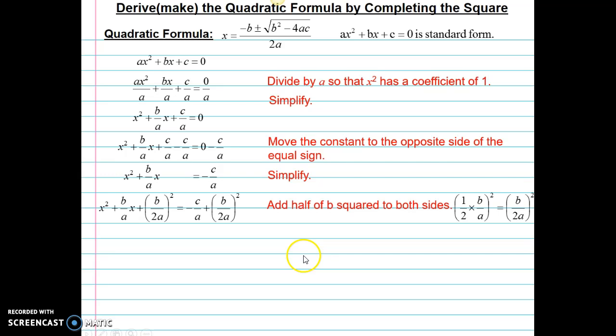Next I'm going to take the b term, b over a, divide it by two, and square it and add it to both sides. So instead of dividing by two, I'm going to multiply by one half, which is the same thing, square it, and add it to both sides.